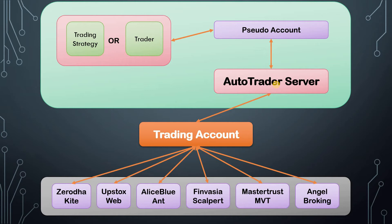Now, how this helps achieve account independence: imagine a scenario where you started to trade with broker A, but you realize there is some outage with broker A. What you can do in such a scenario is log on to AutoTrader Web's settings and map your pseudo account to a trading account from broker B. So without changing a single line of code in your strategy, without even touching your automation setup, your orders will now go into the new trading account belonging to broker B. In this way, you have safeguarded your trading system from a broker's outage.